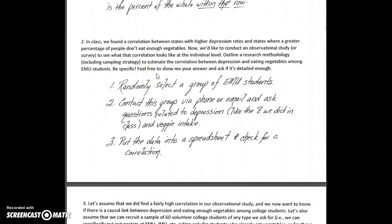For number two, when you're trying to set up an observational study, we don't have the option to randomly assign. So the next best thing we can do is randomly sample or randomly select. We want to do that if at all possible because that allows us to generalize our results to the population. Whatever results we find, even if it's just a correlation, it allows us to generalize to the population. So random selection is the key here.